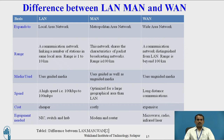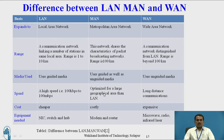Difference between LAN, MAN, and WAN. LAN expands local area network, MAN is metropolitan area network, and WAN is wide area network. LAN range is 1 to 10 kilometers; MAN is up to 100 kilometers; WAN is beyond 100 kilometers. LAN uses guided media; MAN uses guided and unguided media; WAN uses unguided media. LAN speed is high — 100 Mbps. LAN is cheaper, MAN is costly, and WAN is expensive.